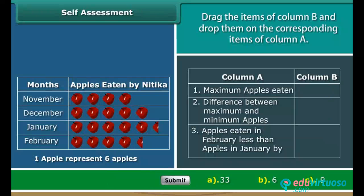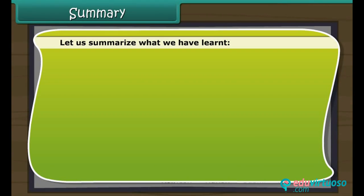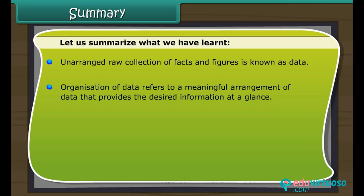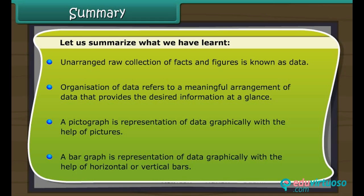Self-assessment: read the information given by the pictograph carefully. Drag the items of column B and drop them on the corresponding items of column A. Summary: unarranged raw collection of facts and figures is known as data. Organisation of data refers to a meaningful arrangement of data that provides the desired information at a glance. A pictograph is a representation of data graphically with the help of pictures. A bar graph is a representation of data graphically with the help of horizontal or vertical bars.